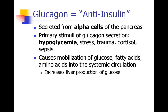Glucagon is easiest to think of as the anti-insulin. Glucagon is secreted from the pancreatic alpha cells and is stimulated by all the opposite things from what stimulates insulin: hypoglycemia, certain kinds of stress and trauma, elevated cortisol levels, and sepsis. Glucagon mobilizes glucose out of storage, mobilizes fatty acids out of storage, brings amino acids into the systemic circulation, and increases hepatic production of glucose.